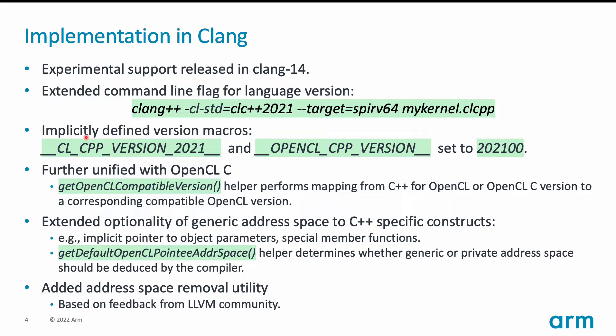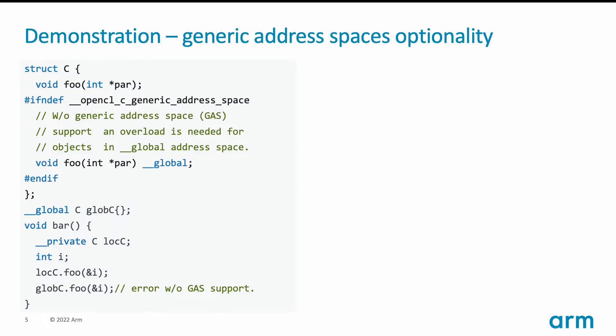An address space removal utility was added, based on feedback from the developer community about something that was not easy with the previous C++ for OpenCL version. In this slide, I'm going to provide a very brief demonstration of this new language version and its key concepts, using generic address space optionality as the example.